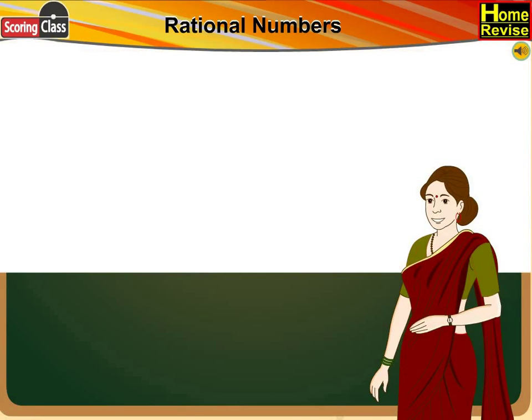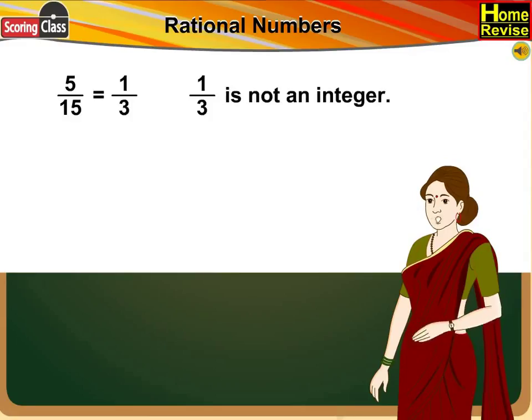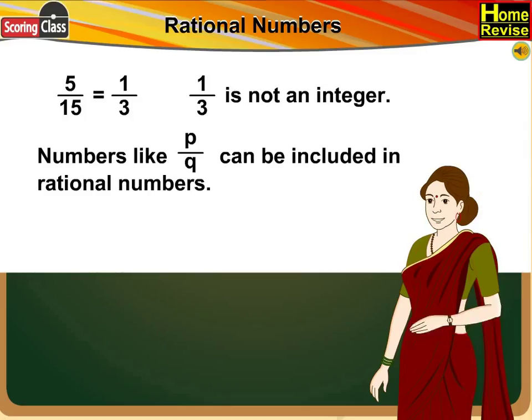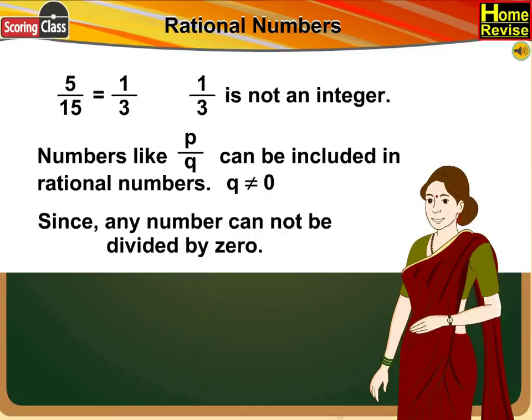Yes, it is correct. But if you take an example, 5 divided by 15 is equal to 1 upon 3. And 1 upon 3 is not an integer, which means that numbers like P upon Q can be included in rational numbers, where Q should not be equal to 0, since any number cannot be divided by 0.